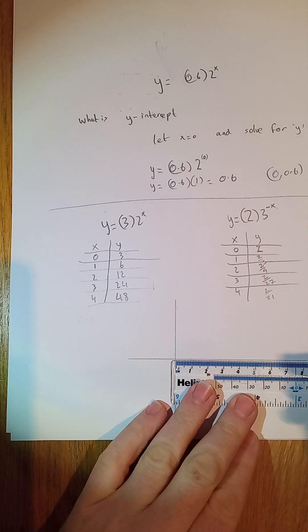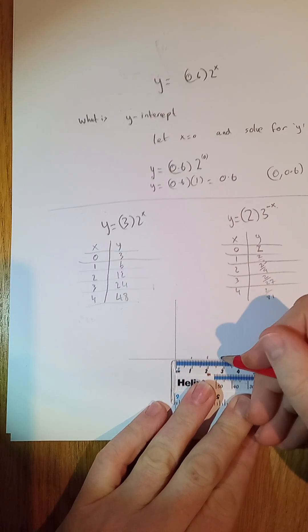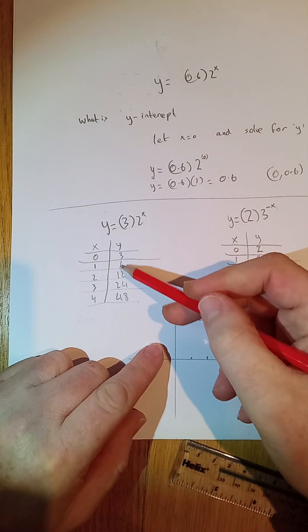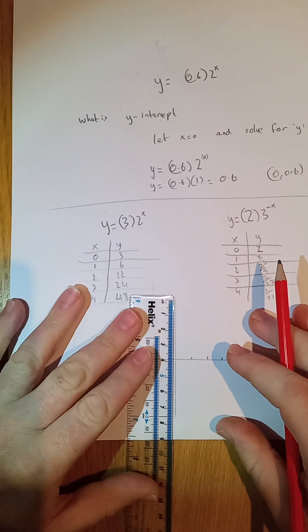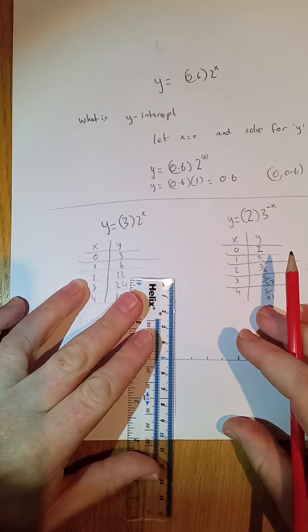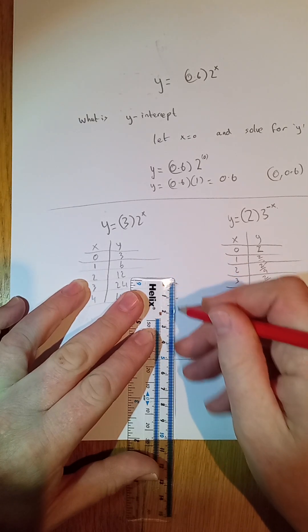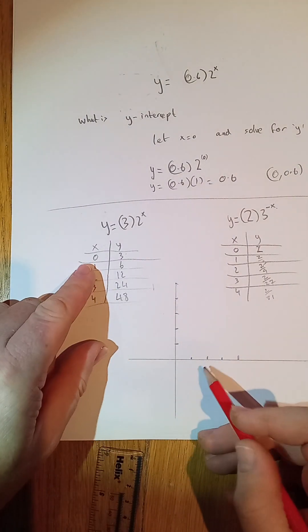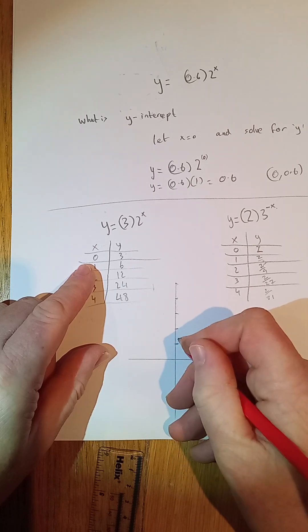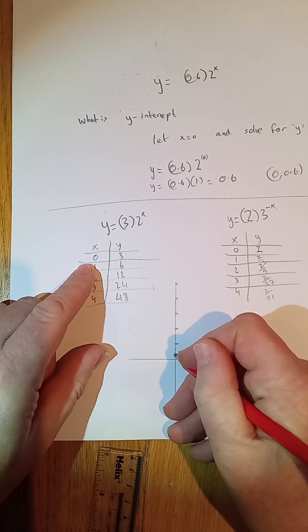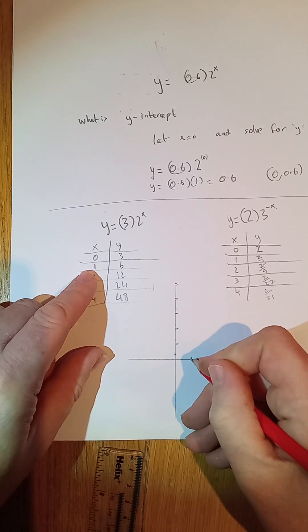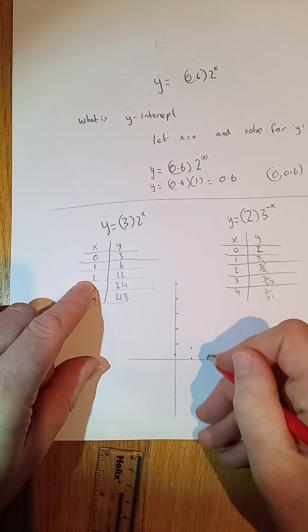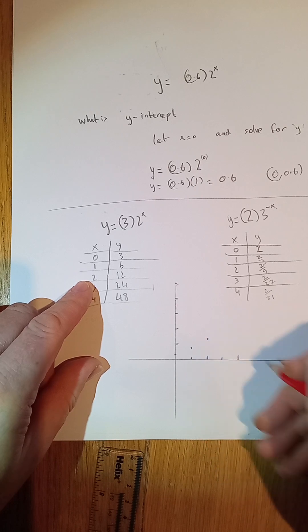We'll graph this one because it's an easier one to graph. So we'll just go, there's 1, 2, 3, 4. And we're going to go up. Let's go up in 10s, I suppose. 50, 40, 30, 20, and 10. So we're starting at 0 on the x and 3 on the y. So if this is 10, it's about there, a third of the way up the first interval. When it's 1, it's 6. So it's about 2 thirds up. When it's 2, it's 12. It's about there. Again, you need graph paper to do this properly.